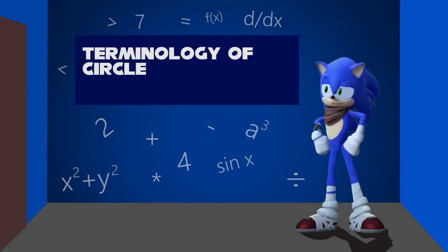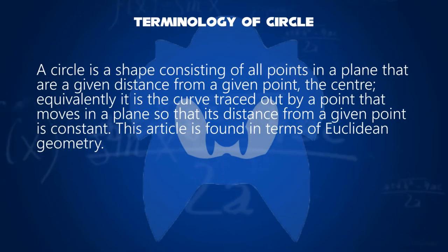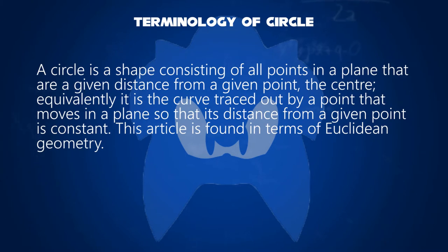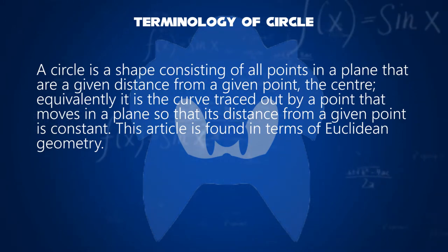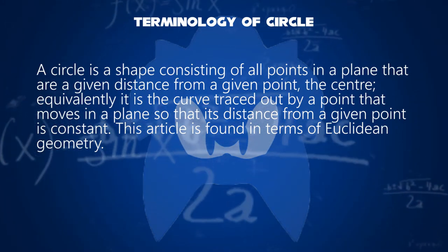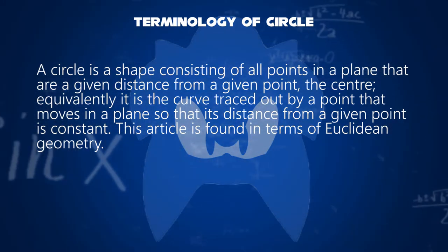Hello, I'm Sonic. We will learn about the terminology of a circle. A circle is a shape consisting of all points in a plane that are a given distance from a given point — the center. Equivalently, it is the curve traced out by a point that moves in a plane so that its distance from a given point is constant.